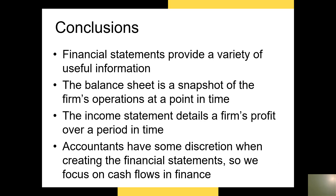To conclude this first part of our second chapter, financial statements can provide a host of useful information. We tend to focus on the balance sheet and the income statement. The balance sheet is a snapshot of the firm's operations at a singular point in time, while the income statement details the firm's profit and total revenue over a period of time — a quarter or a year. Because accountants have some discretion when creating financial statements, we tend to focus on cash flows in finance.